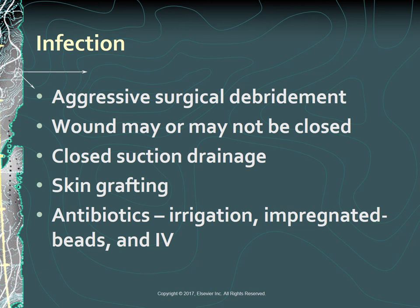Open fractures require aggressive surgical debridement. The wound is initially cleaned by pulsating saline lavage in the operating room. Gross contaminants are irrigated and mechanically removed, and contused, contaminated, and devitalized tissue are surgically excised. The extent of the soft tissue damage determines if the wound will be closed at the time of surgery and if it requires repeat debridement, closed suction drainage, and skin grafting. Depending on location and extent of the fracture, reduction may be maintained by external fixation or traction. During surgery, the open wound may be irrigated with antibiotic solution, and antibiotic-impregnated beads may be placed in the surgical site. The patient may have antibiotics administered IV for 3 to 7 days postoperatively.